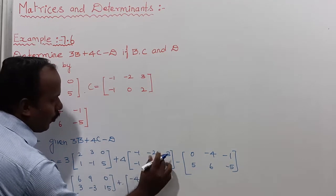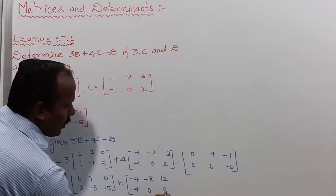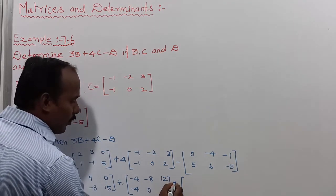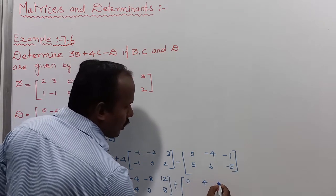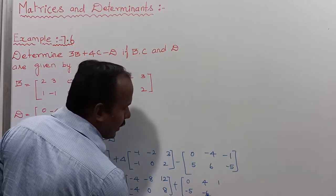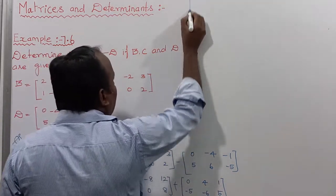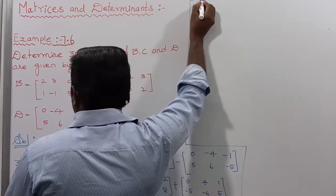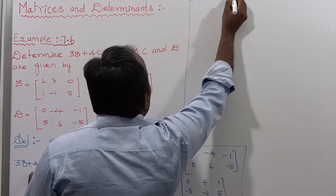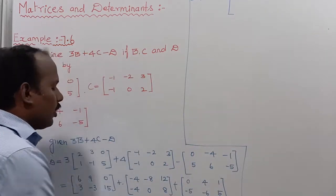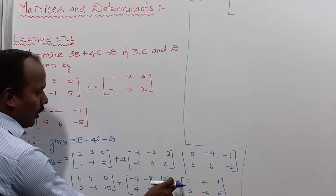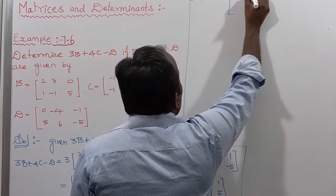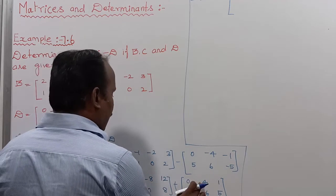Minus D gives: 0, plus 4, next plus 1, minus 5, minus 6, plus 5. So therefore the values of 3B plus 4C minus D — adding the three matrices: first term 6 plus minus 4 plus 0, second term 9 minus 8 plus 4.